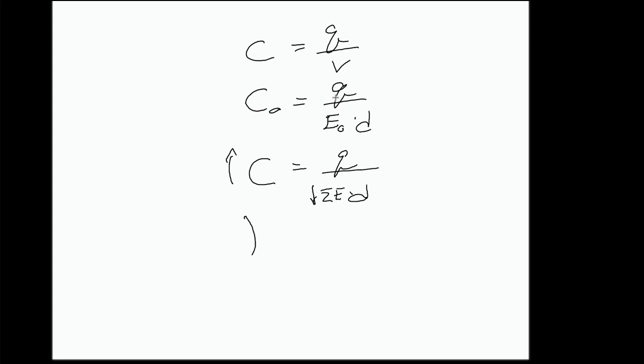So rather than working this out every time, what we do is we introduce something called the dielectric constant. The dielectric constant is symbolized by a kappa. I know that doesn't look very good, but let's be honest, even if I had my dry erase board, it wouldn't look very good. So yeah, look up what a kappa looks like because it's a little bit different than that. So this is the dielectric constant.